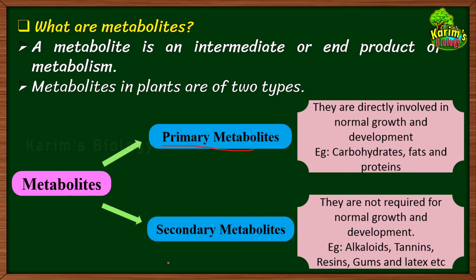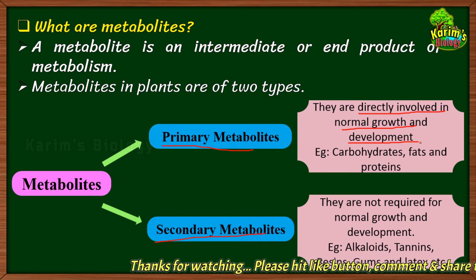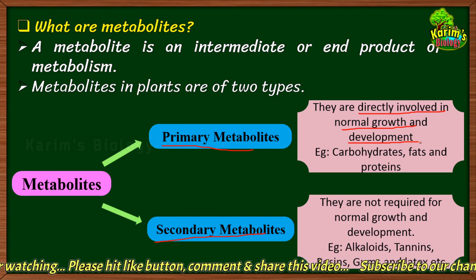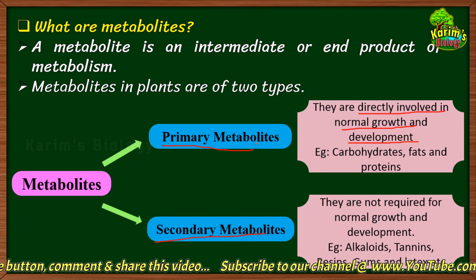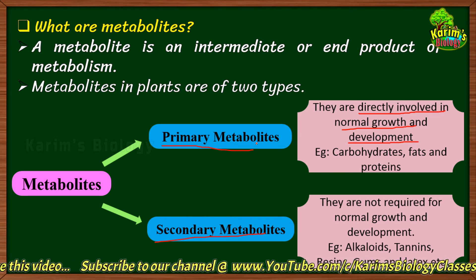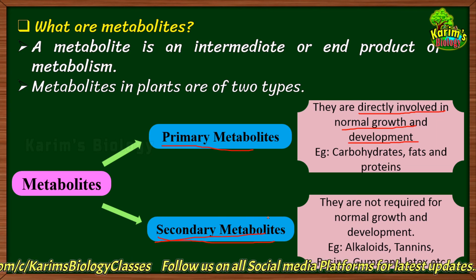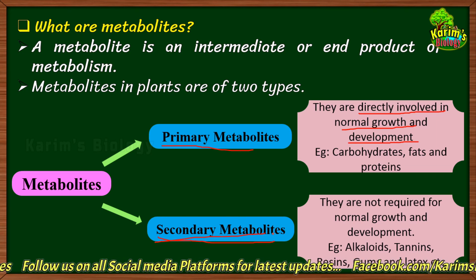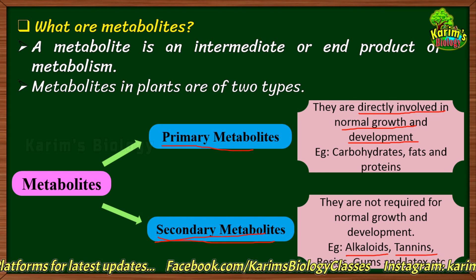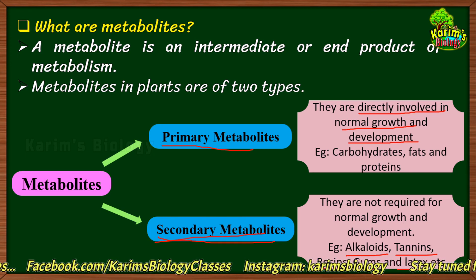Primary metabolites are metabolites directly involved in the normal growth and development of the plant body. Examples include carbohydrates, fats, and proteins, which are helpful for the plant to grow and develop. Secondary metabolites, on the other hand, are not required for normal growth and development. Examples of secondary metabolites include alkaloids, tannins, resins, gums, and latex.